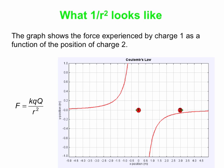Speaking of that distance effect, let's have a quick look at what one over r squared looks like. Here we have a charged object — object one — and there's another charged object nearby, object two. We can see little green arrows attached to them, and clearly the charges are repelling each other because these two charges have the same sign. We're graphing the size and direction of the force experienced by object one as a function of the position of object two. The green arrows on each charge represent that too, but we've also got this overall graph.